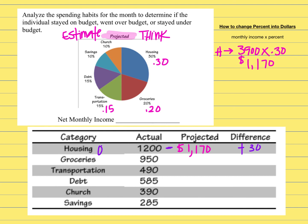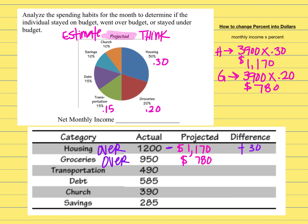For groceries, monthly income $3,900 times 20% as a decimal, 0.20, gives $780. Putting that in the table, they also went over budget — they spent $950 but only projected $780. Subtracting gives a positive $170. That is really big time over budget.